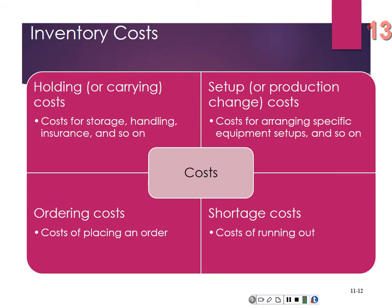There are costs to balance: holding costs for storage, handling, and insurance; setup costs for changing over equipment, which can be 2 to 36 hours depending on the transition; ordering costs for the scheduler's work and receiving; and shortage costs if inventory is insufficient. The fixed order quantity model has core assumptions for the basic economic order quantity (EOQ): demand is constant and uniform, lead time is constant, price per unit is constant, holding cost is based on average inventory, setup/ordering costs are constant, and all demand will be satisfied.